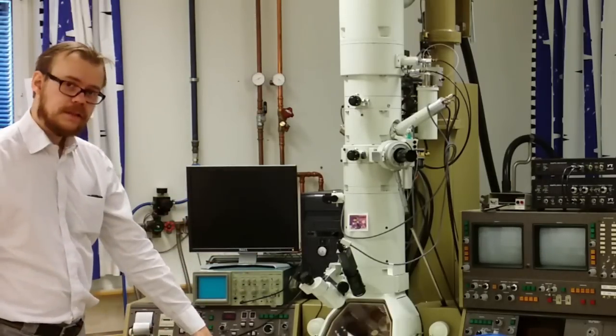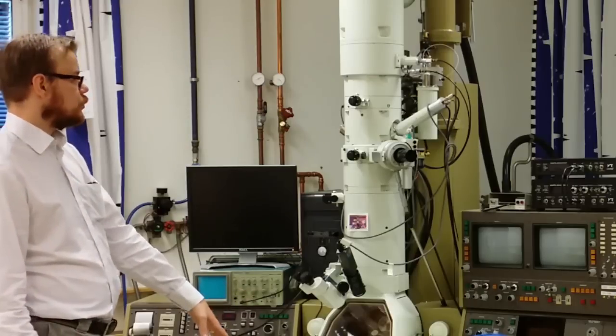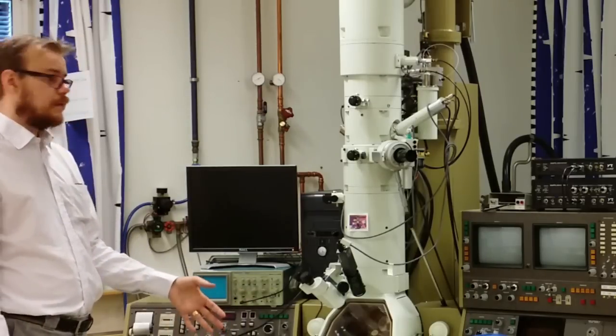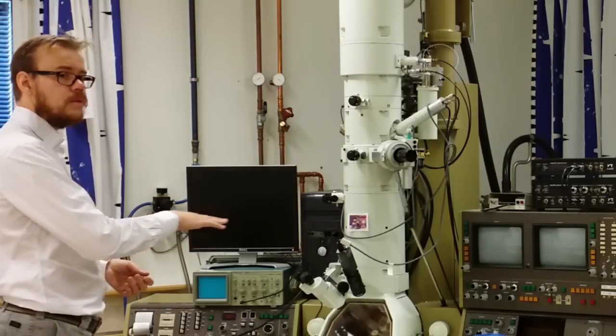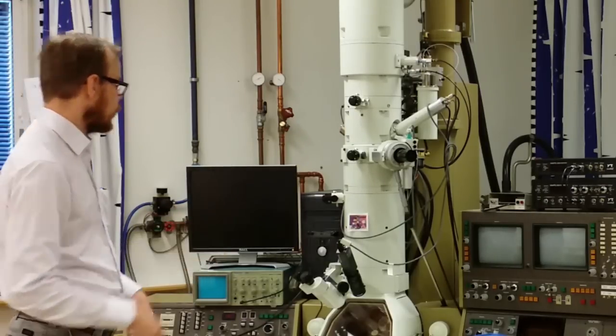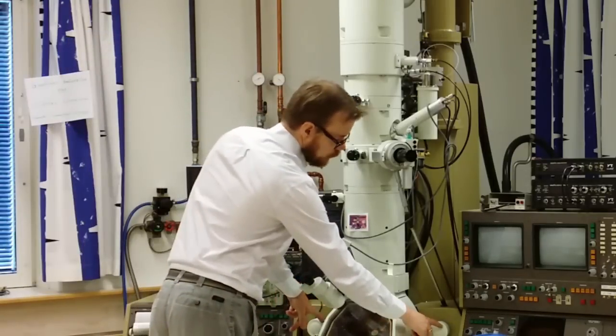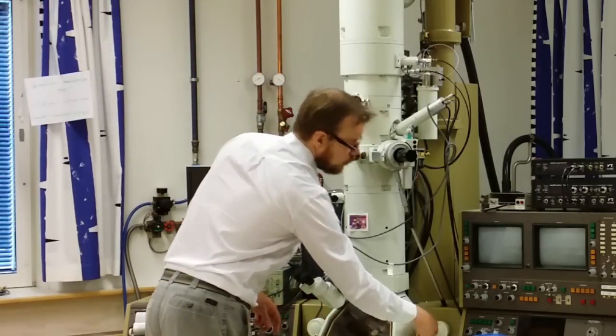On the bottom you also have pedals. The pedals you use to tilt the sample in different directions. To position the sample across and change the view of the sample that you are viewing, you use these two knobs. These you can turn and then the sample will move.